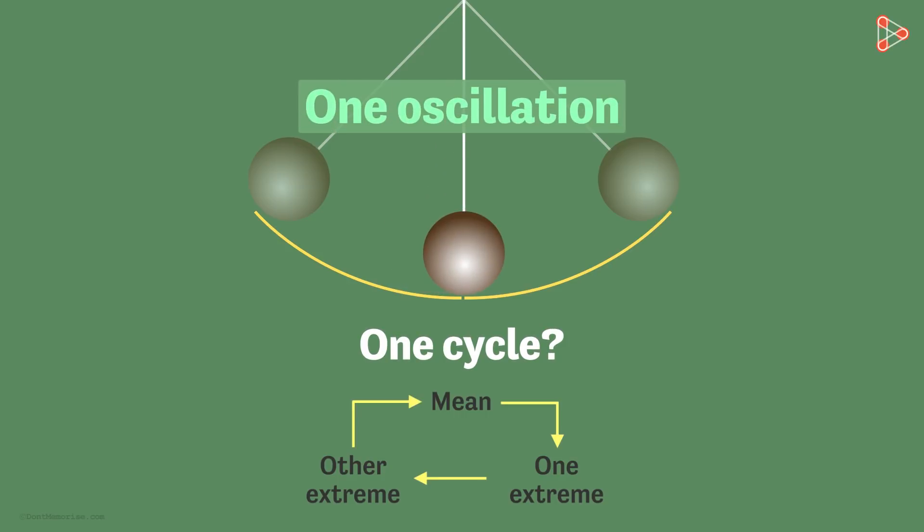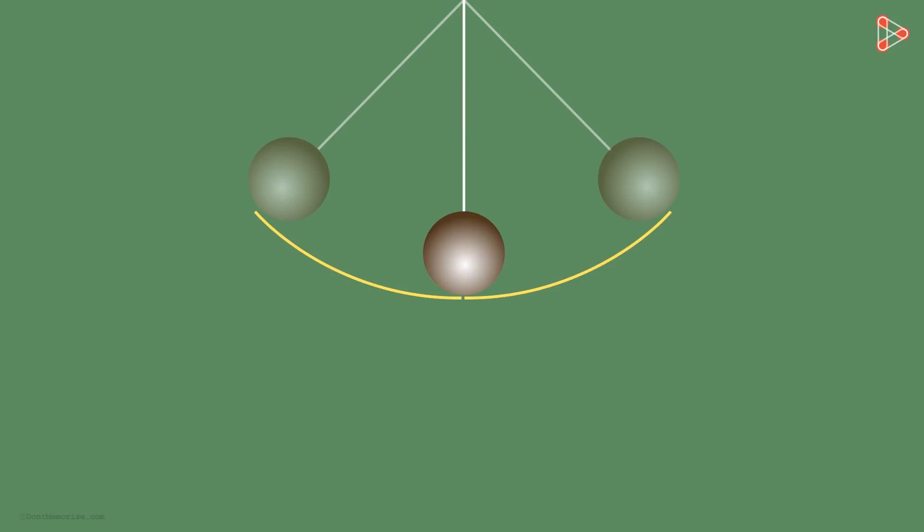Now obviously due to air resistance, this bob will eventually come to a halt after some time. However, under ideal conditions, the motion will simply repeat itself forever in equal intervals of time. Such a type of motion is called periodic motion.